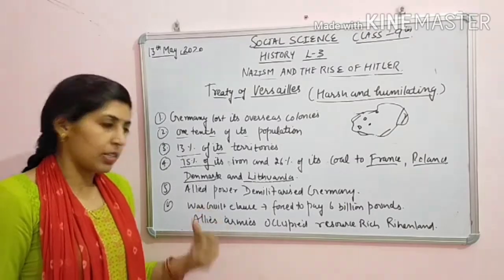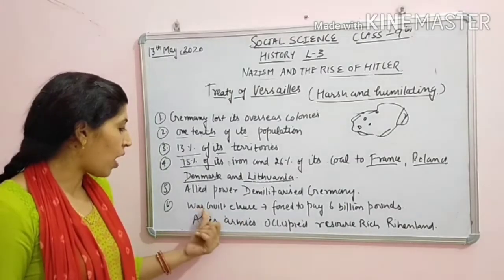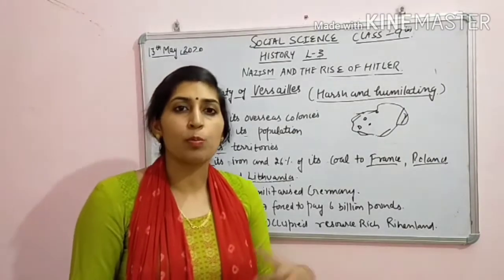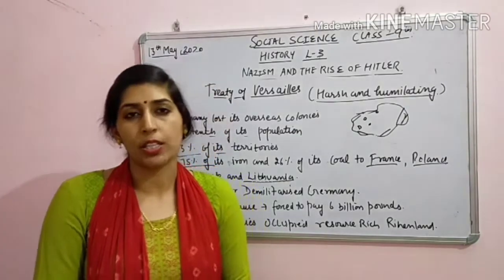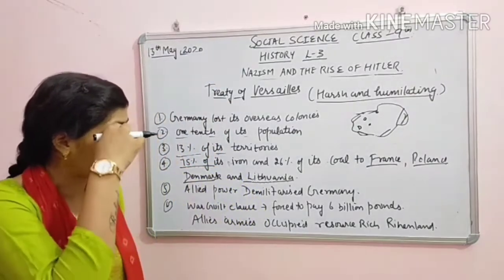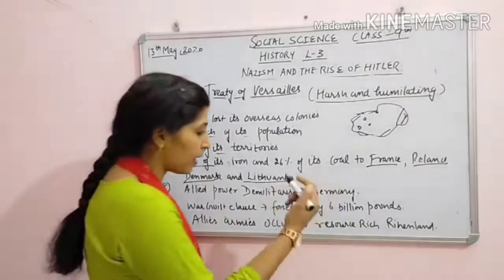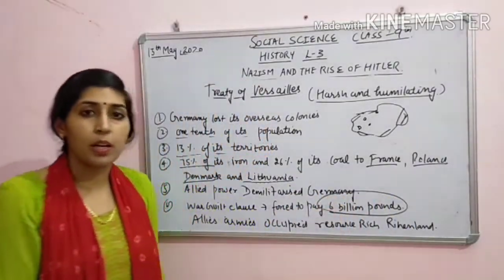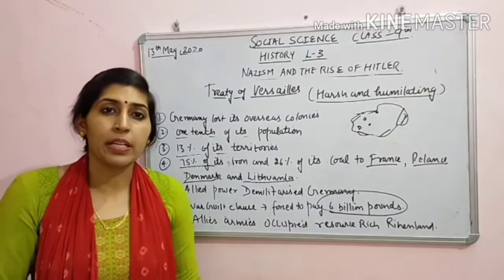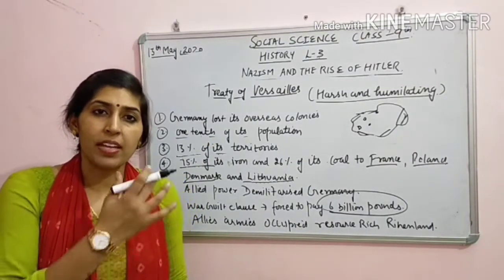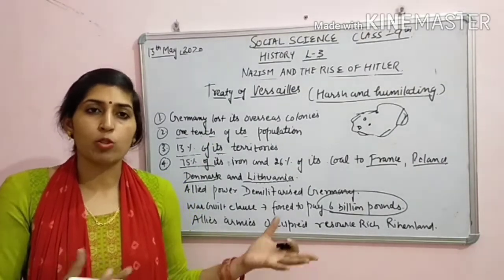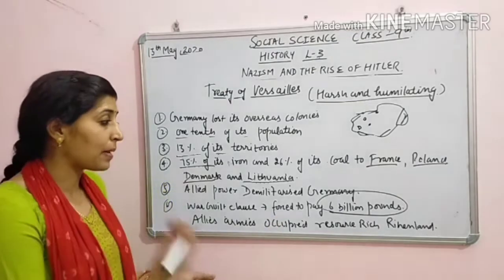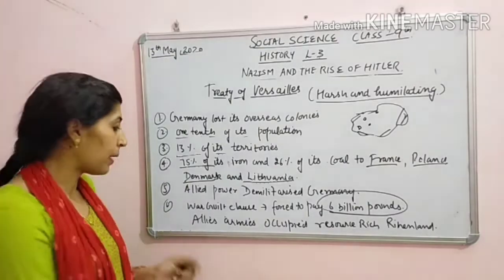War guilt clause - kise bola jata hai war guilt clause ka matlab ki bhai tumne jo nuqsaan karaaya, usko pura karne ke liye ab tumhe compensation dhugtaan karna padega, ek tax pay karna padega, kuch paisa dhena padega. Aur paisa tha six billion pound. Toh abhi Germany kahaan se dhega six billion pound? Waise war mein uska itna hi paisa kharcha ho chuka hai, toh iske paas abhi itna paisa nahi hai.